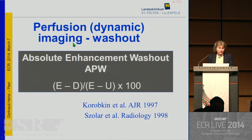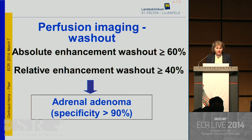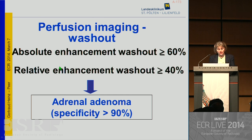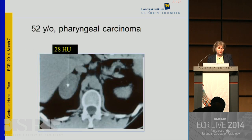Nowadays you don't have to keep the washout formulas in mind — just Google the absolute and relative percentage washout formulas. You can enter the numbers and the computer will calculate the result. What you need to know: if the absolute washout is above 60%, the lesion is very likely benign; if the relative washout is above 40%, it is also very likely benign.